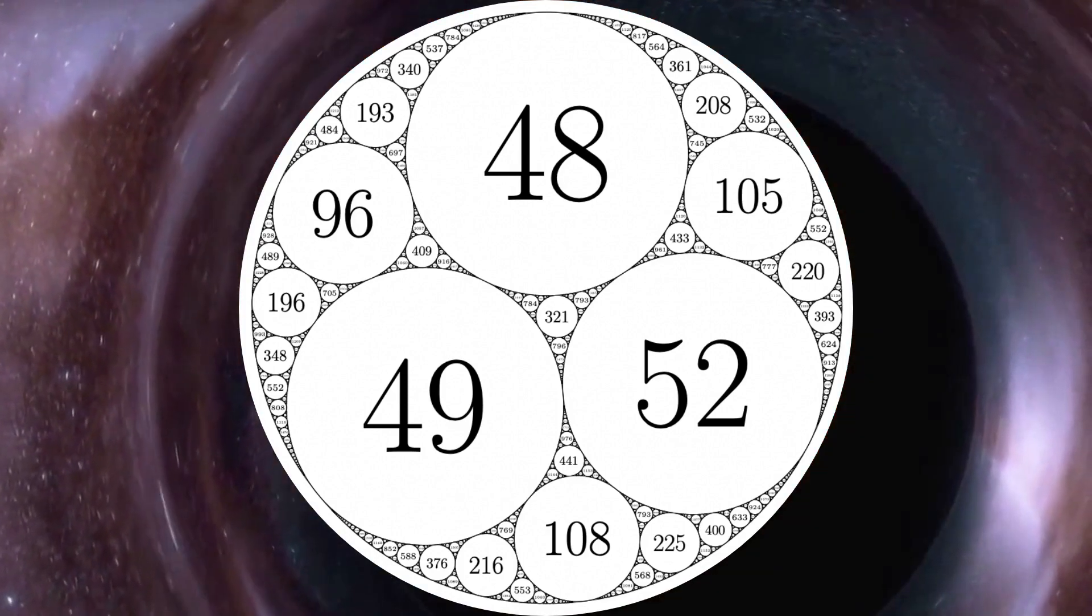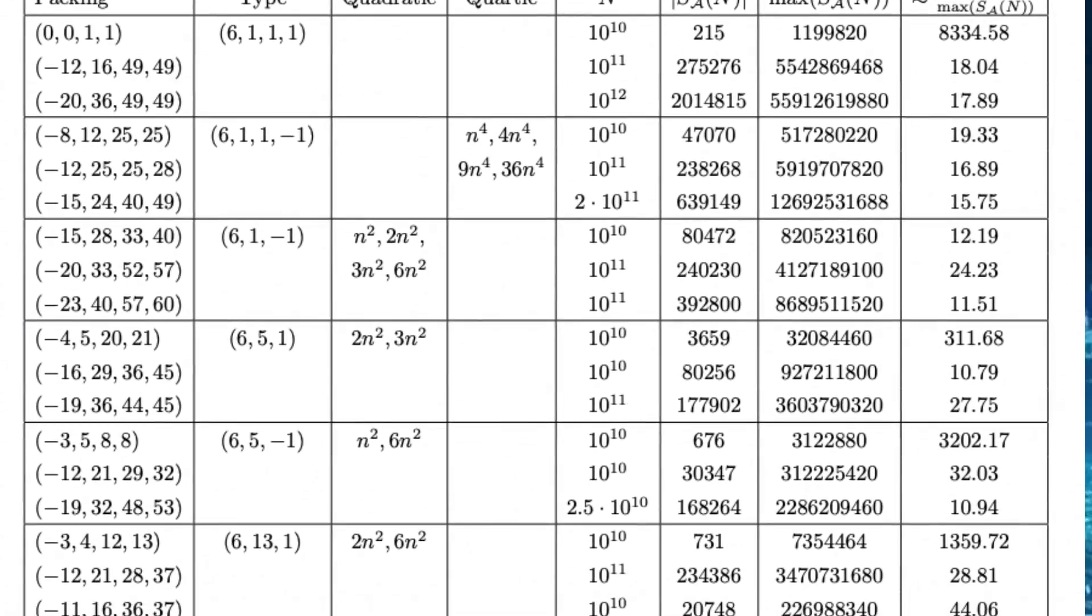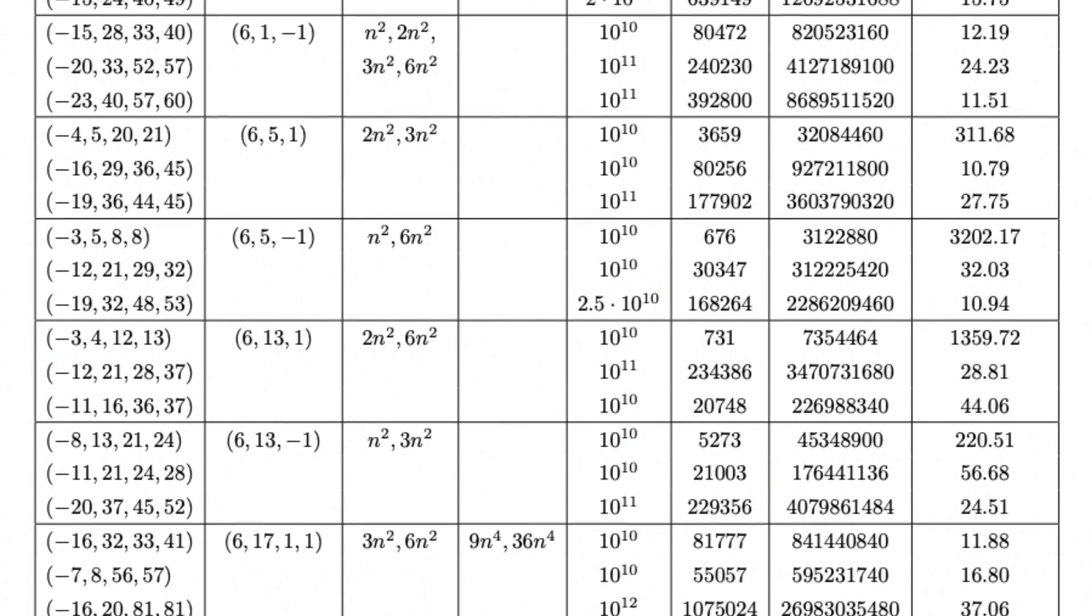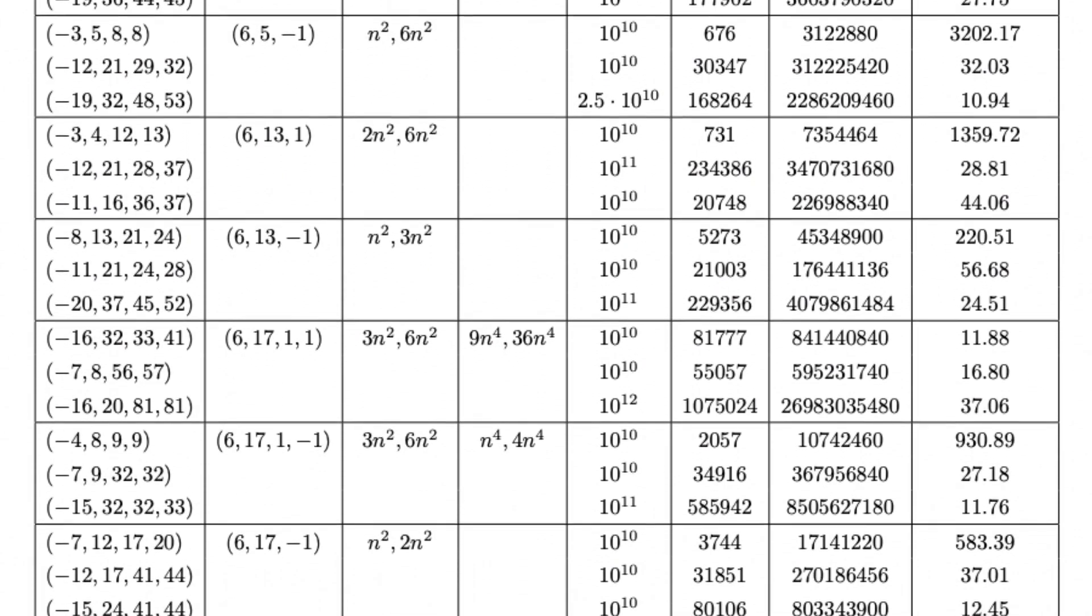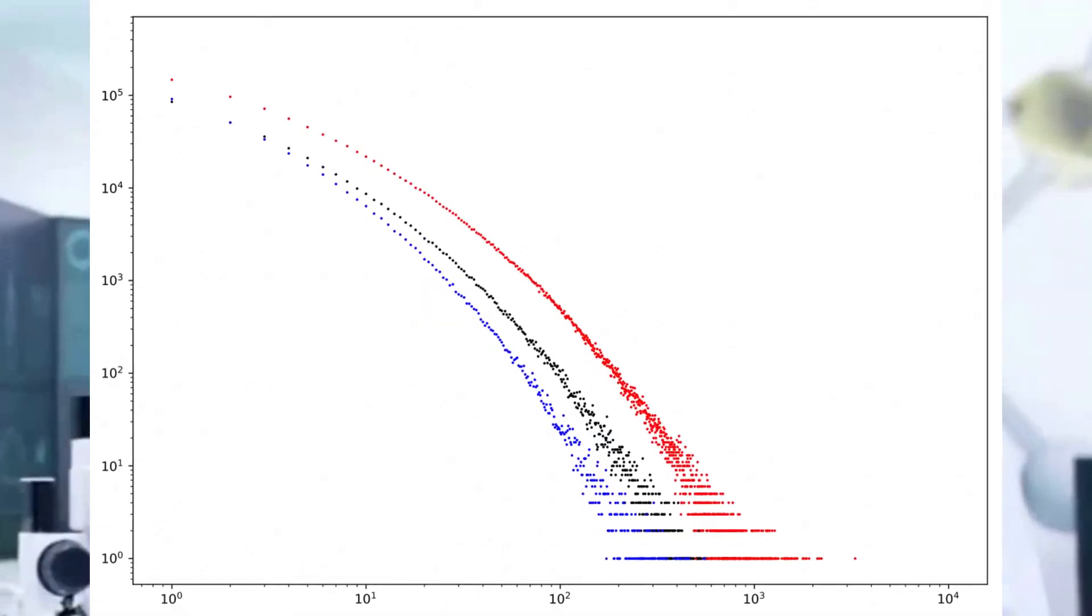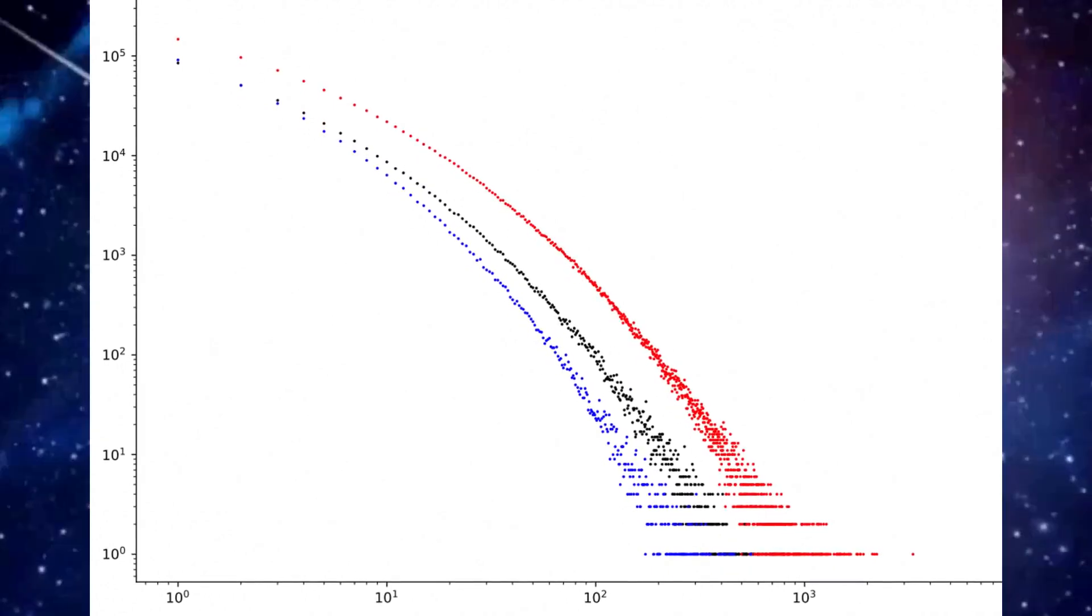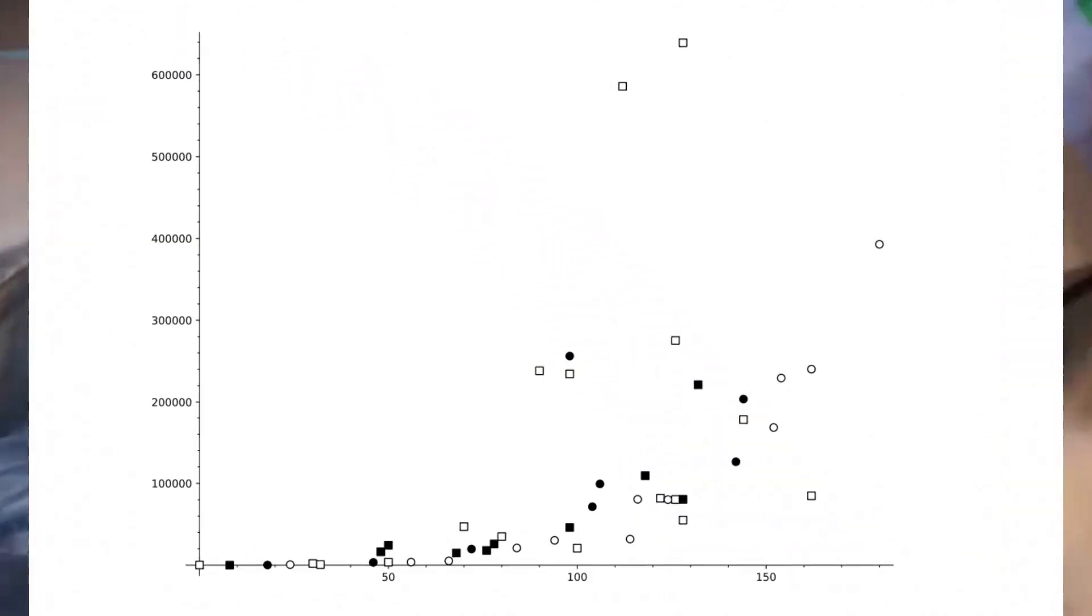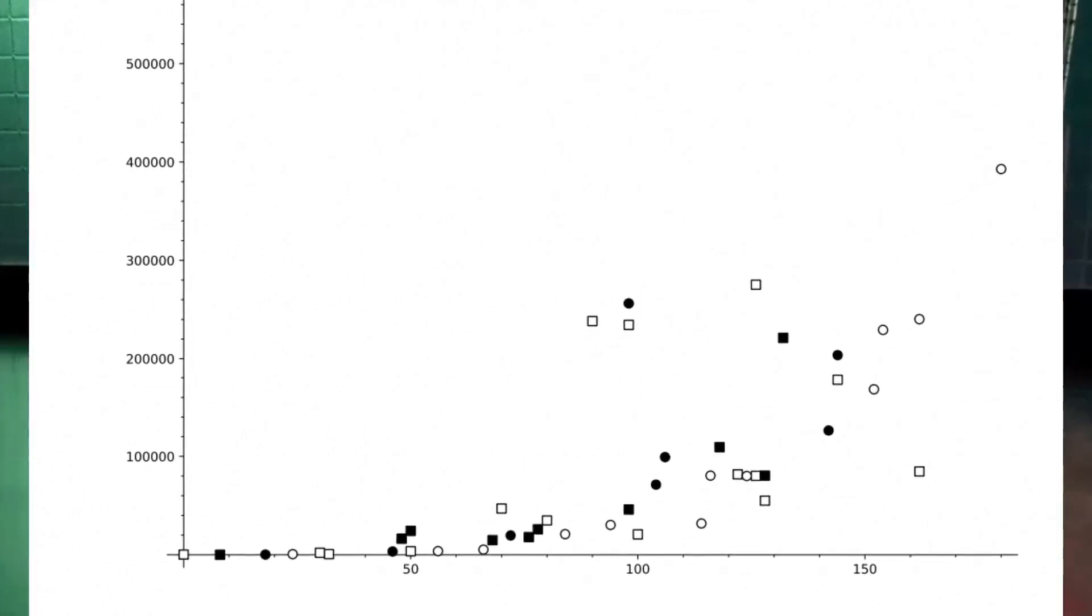By utilizing computer-generated datasets, they plotted the relationship between curvature and circles. To their astonishment, they stumbled upon a pattern that defied the anticipated outcome of the conjecture. The patterns they uncovered cast doubt on the validity of the local global conjecture. Through meticulous analysis and a proof based on centuries-old mathematical principles, they demonstrated that the conjecture does not universally hold true.